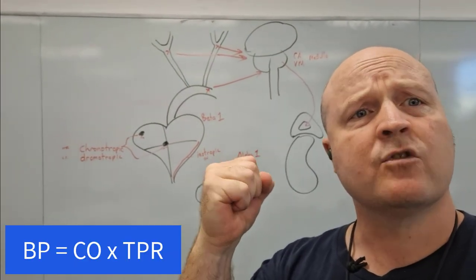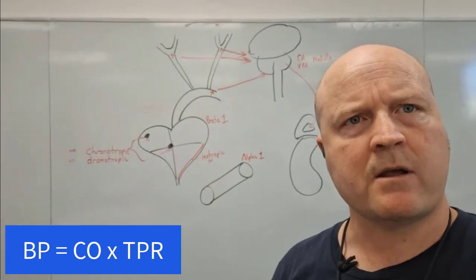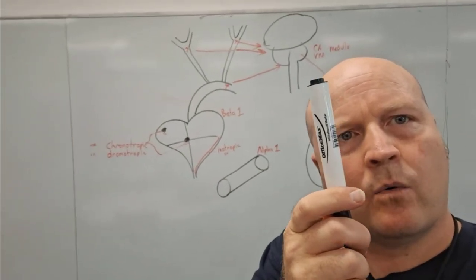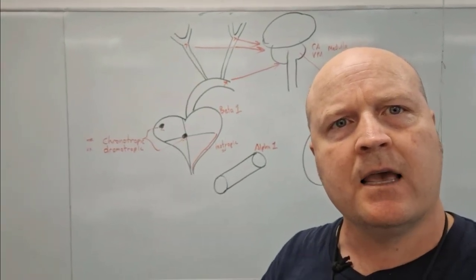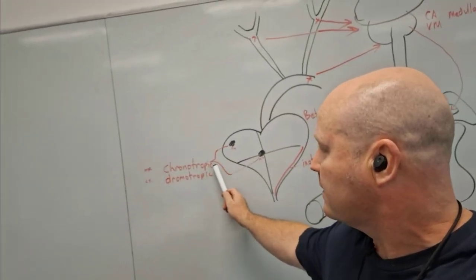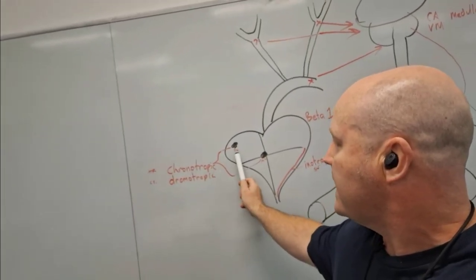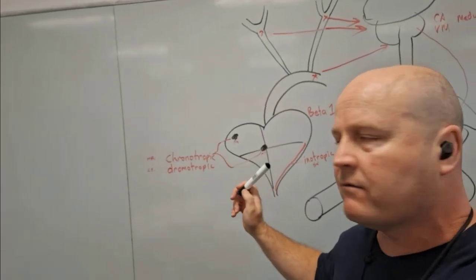So this is going to increase total peripheral resistance, therefore increasing blood pressure, and we're also going to go to our heart, and we're going to have a chronotropic response. We'll go to our SA node and AV nodes, and that's going to increase our heart rate.